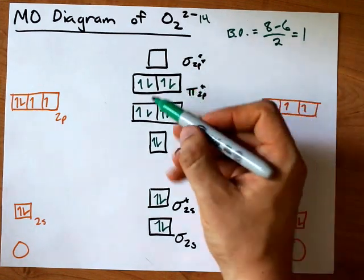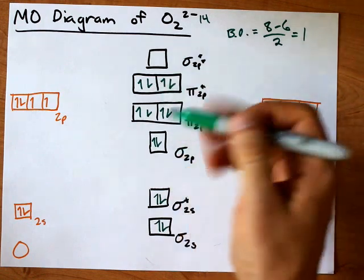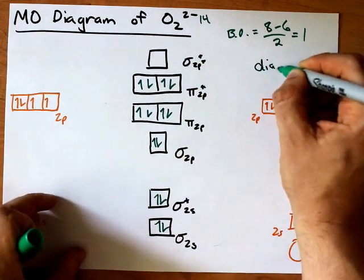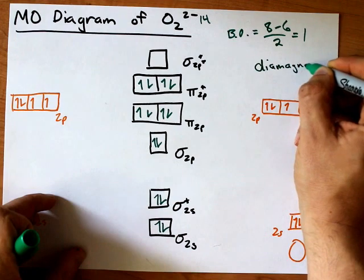I'd like to point out that because all of the electrons here are paired, O2 2- is a diamagnetic species.